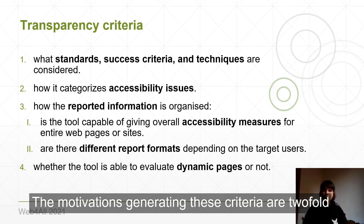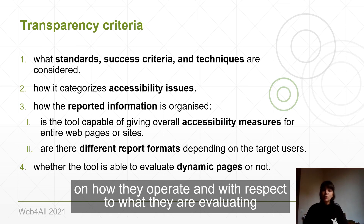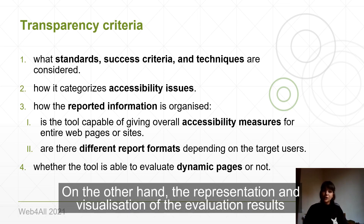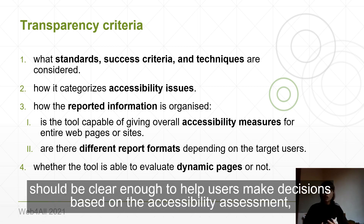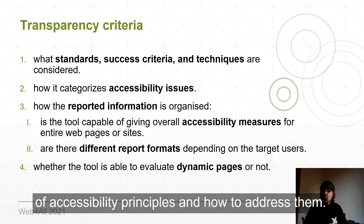The motivations generating these criteria are twofold. On the one hand, tools should provide transparent, detailed information on how they operate and with respect to what they are evaluating. On the other hand, the representation and visualization of the evaluation results should be clear enough to help users make decisions based on the accessibility assessment, also considering that users of such tools often have limited knowledge of accessibility principles and how to address them.